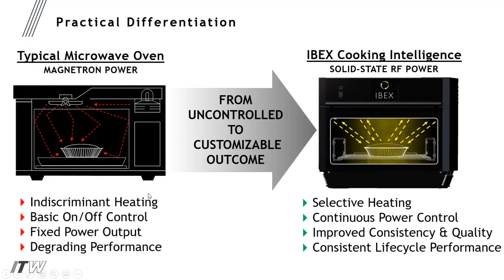Everybody's familiar with trying to cook food in a microwave — it can be chaotic and uncontrolled. What the solid-state oven offers is a customizable outcome. With this closed-loop feedback, you can develop sophisticated heating algorithms, apply continuous power control, and achieve improved consistency and quality. The performance of the solid-state generator doesn't change over time, so throughout the product lifecycle there's no degradation in performance — that's the real customer advantage over a magnetron-based oven.